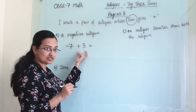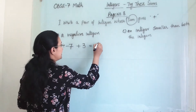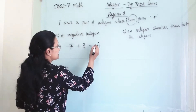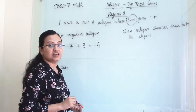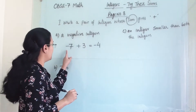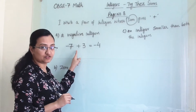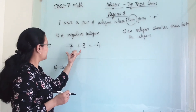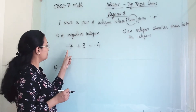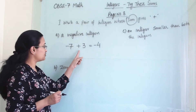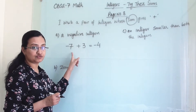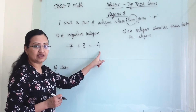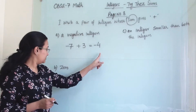For example, minus 7 plus 3. The difference is 4 and the answer will carry the negative sign, giving us minus 4. Here, minus plus becomes minus, so we perform subtraction but it is still an addition operation. The answer carries the sign of the bigger number.